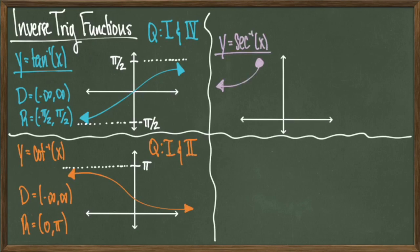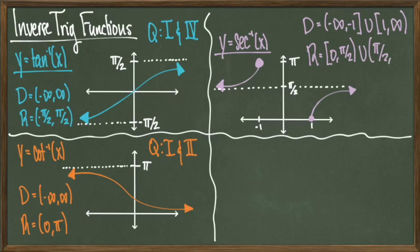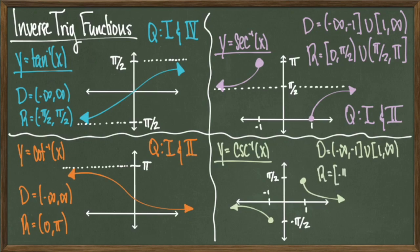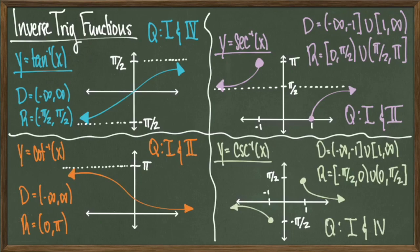The function y equals secant inverse of x has domain negative infinity to negative 1, union with 1 to infinity. The range will be from 0 to pi over 2 union with pi over 2 to pi, and it outputs angles in the first and second quadrant. Finally, y equals cosecant inverse of x has domain negative infinity to negative 1, union with 1 to infinity, and its range is negative pi over 2 to 0 union with 0 to pi over 2. It outputs angles in the first and fourth quadrant.